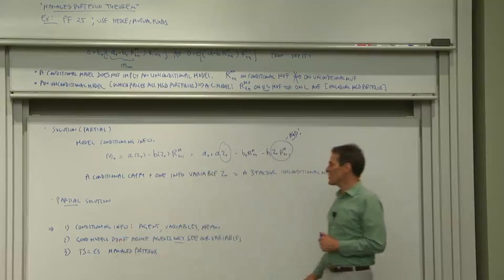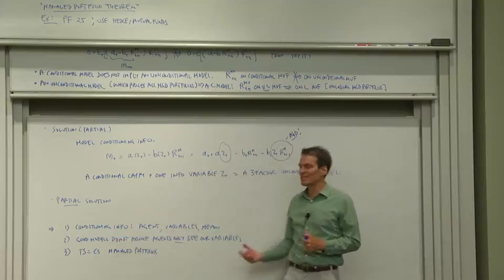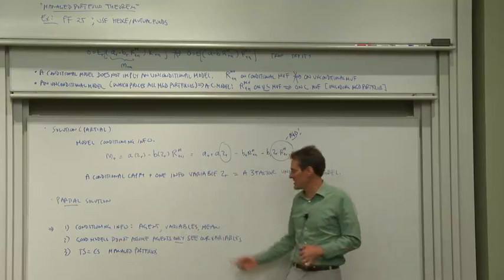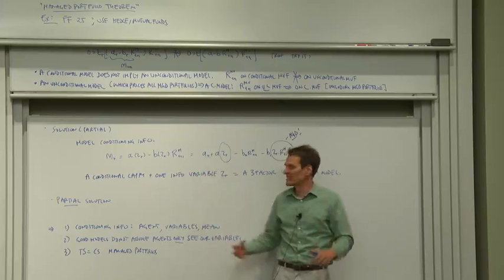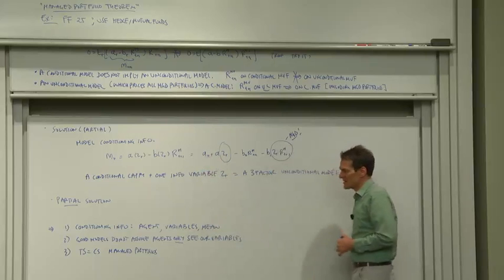Good models don't assume that agents only see the variables we see. Good models recognize that agents and markets see way more than we see, and they derive correct implications that condition down to the information set that we can see.